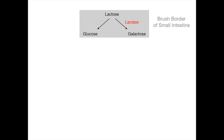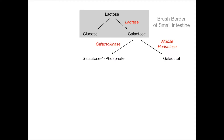Galactose can be converted into one of two different products: galactose-1-phosphate or galactitol. The enzyme that converts galactose into galactitol is aldose reductase. The enzyme that converts galactose into galactose-1-phosphate is galactokinase. Whenever you see an enzyme ending in 'kinase,' it means it's putting a phosphate group on the reactant. Galactokinase puts a phosphate in the one position, which is why the product is galactose-1-phosphate.